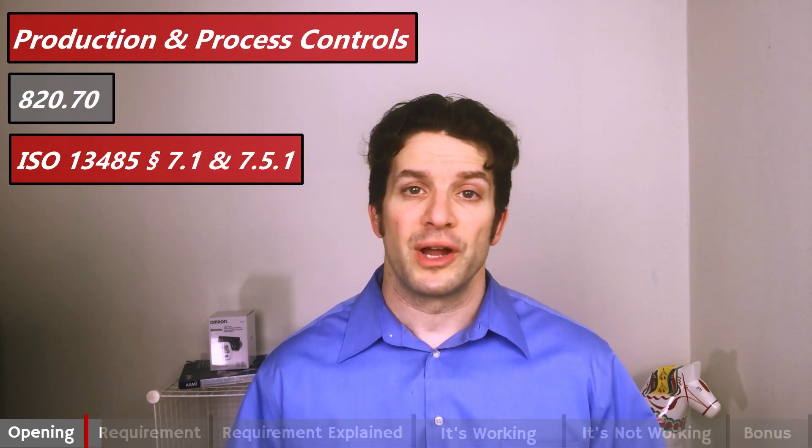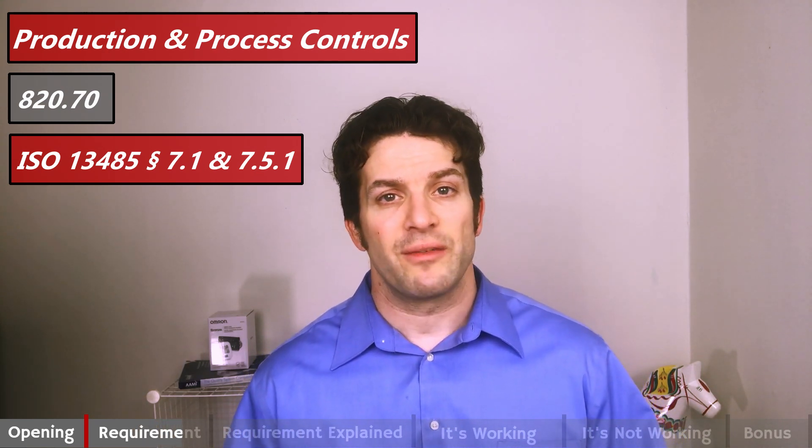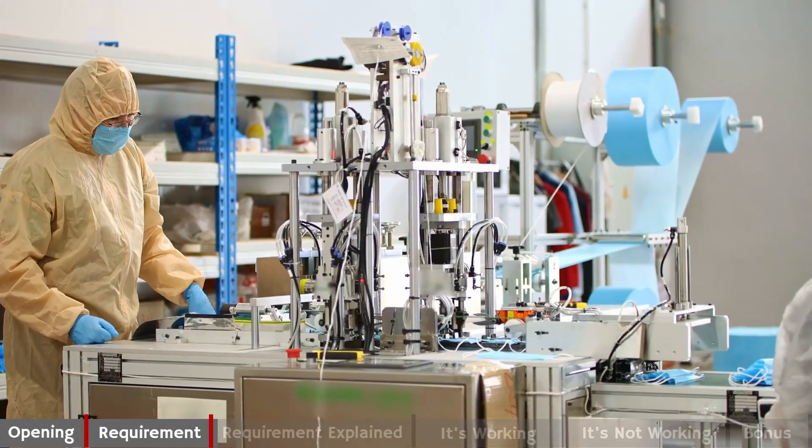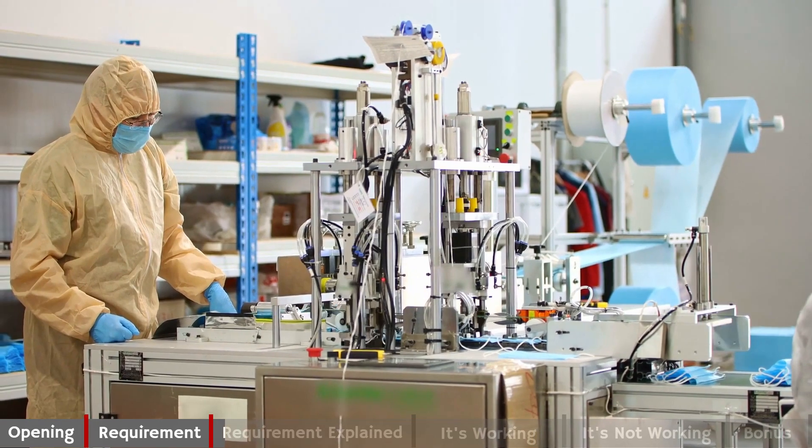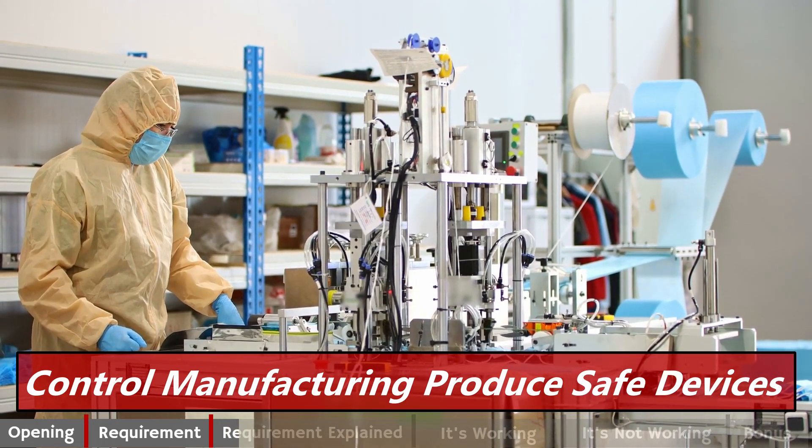Our topic production of process controls comes directly from 820.70 and 1345 sections 7.1 and 7.5.1. Production and process controls in five words: Control manufacturing, produce safe devices.